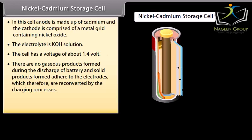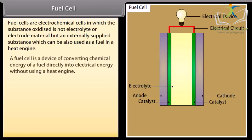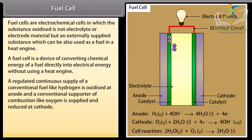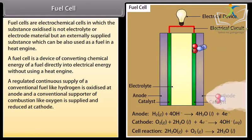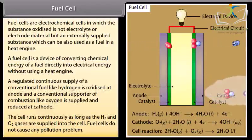Fuel cell. Fuel cells are electrochemical cells in which the substance oxidized is not electrolyte or electrode material but an externally supplied substance which can also be used as a fuel in a heat engine. A fuel cell is a device of converting chemical energy of fuel directly into electrical energy without using a heat engine. A regulated continuous supply of a conventional fuel like hydrogen is oxidized at anode and a conventional supporter of combustion like oxygen is supplied and reduced at cathode. The cell runs continuously as long as the hydrogen and oxygen gases are supplied into the cell. Fuel cells do not cause any pollution problem.